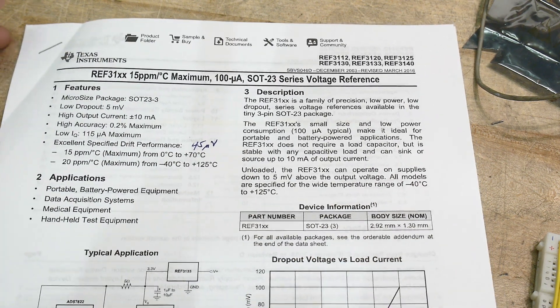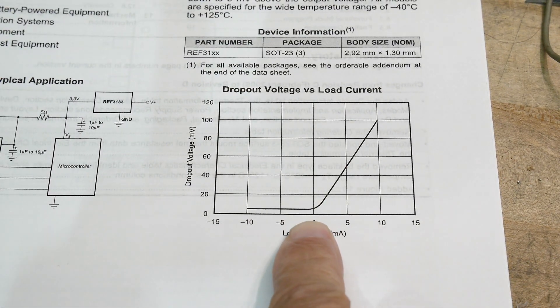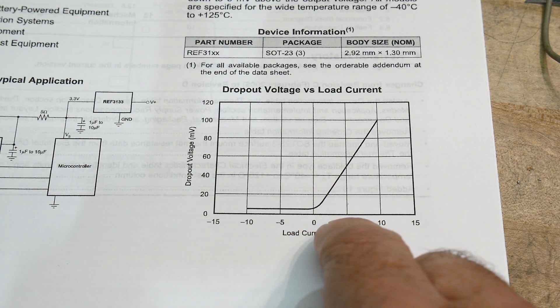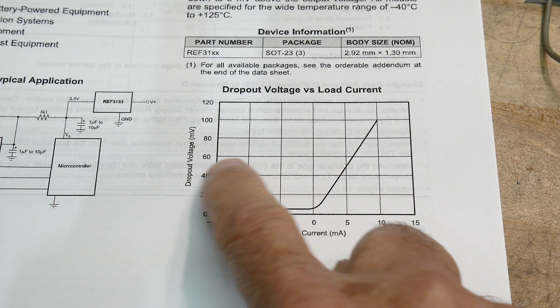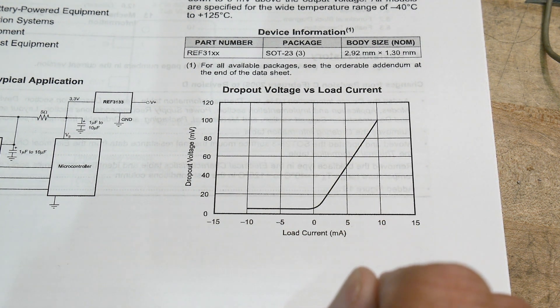The really cool thing about this one is the dropout voltage, which is insane on it. So here's a graph of the dropout voltage. At 5 milliamps of current draw, the dropout voltage is 50 millivolts. 50 millivolts! That's pretty crazy.